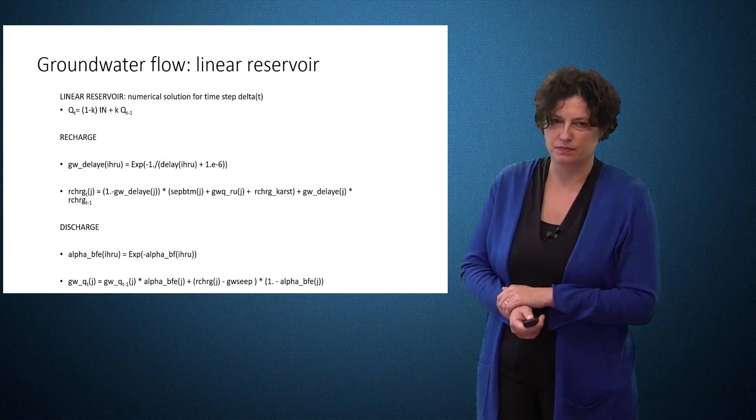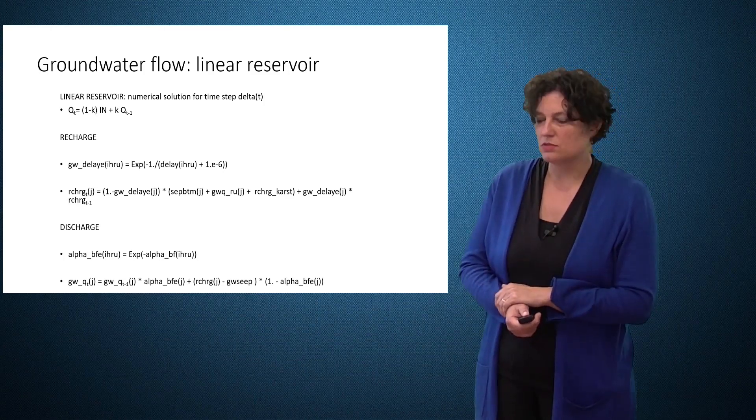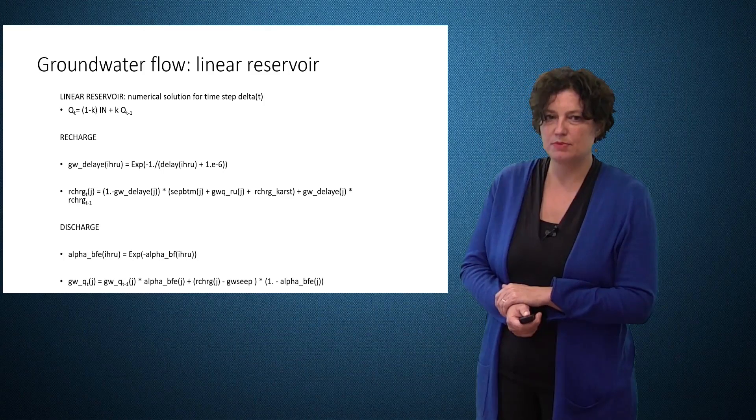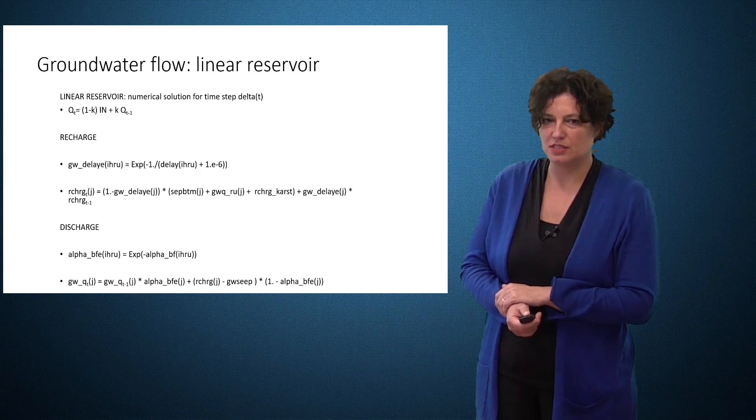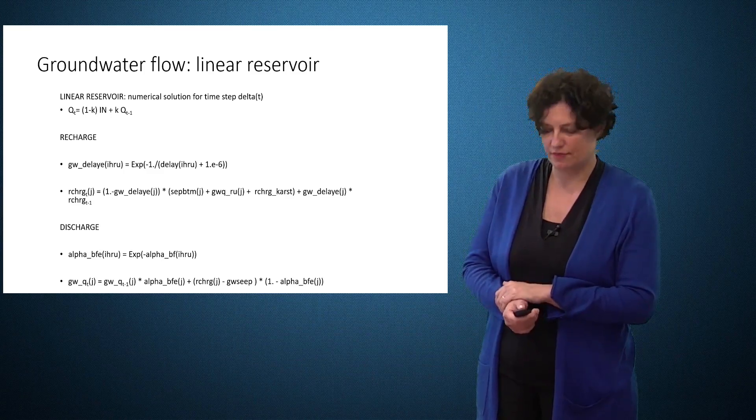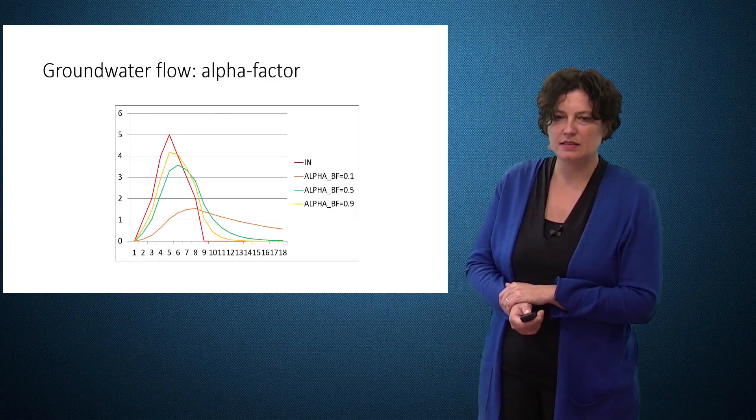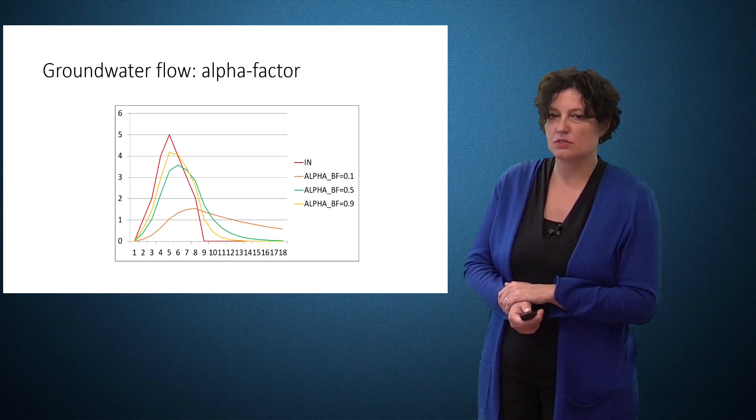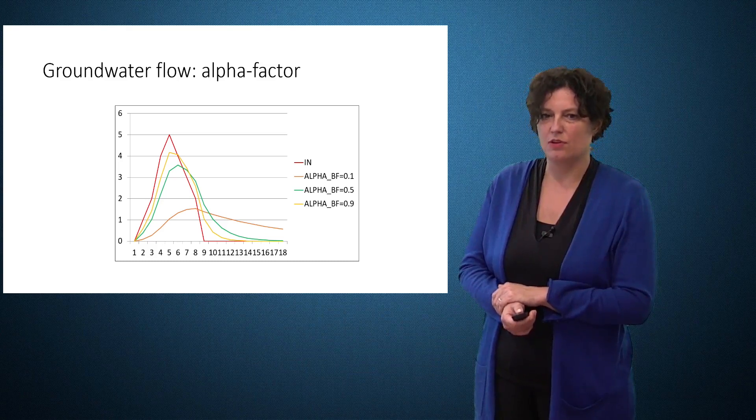The ground water flow also has to take into account that there is a delay. This delay can be long, days, months, years in groundwater. For this, we have a linear reservoir equation. We apply it twice. Once, to account for the delay from percolation up to recharge. And next, there is a delay from the recharge up to the discharge of groundwater to the river. So there are two linear reservoirs, and they both have their specific parameters. Here you can see the effect of the alpha factor on the groundwater flow. If we have a small alpha factor, we have a low flow. And if we have a high alpha factor, we have a quicker flow.